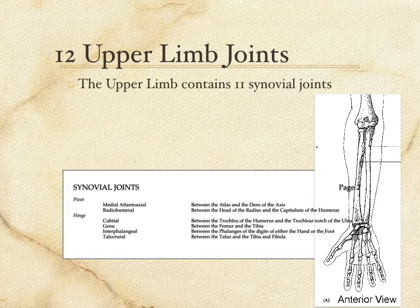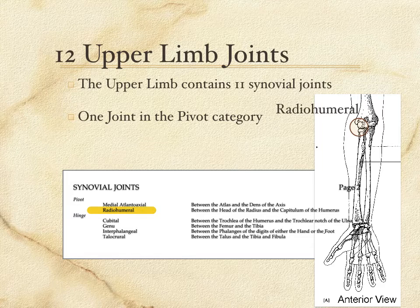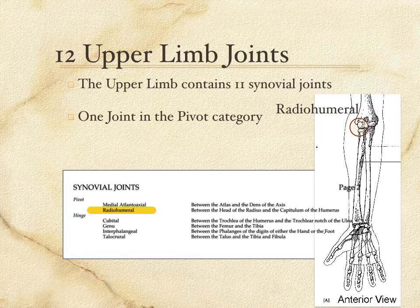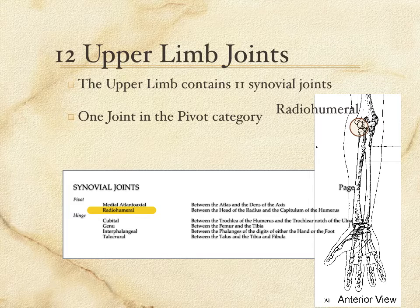The first synovial joint is in the pivot category and is known as the radiohumeral joint. It is found between the capitulum of the humerus — the lateral condyle — and the radius, and this allows for a rotating action. You can rotate your forearm and your hand palm down and palm up without moving the shoulder or the elbow, facilitated by this joint at the elbow that allows the radius to rotate against the capitulum of the humerus. So the radiohumeral is a pivot joint.